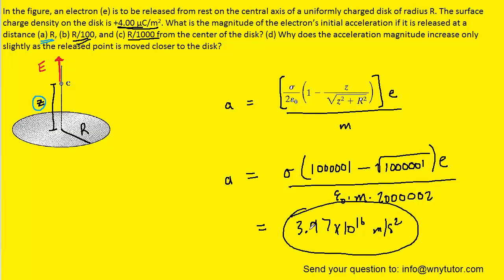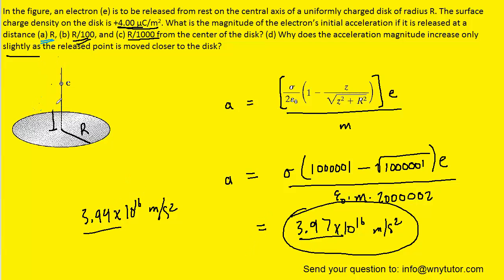Notice that this number was only slightly bigger than the acceleration found in part B, which was 3.94 times 10 to the 16 meters per second squared. That relates to the final part of the question: why does the acceleration magnitude increase only slightly, going from 3.94 to only 3.97?